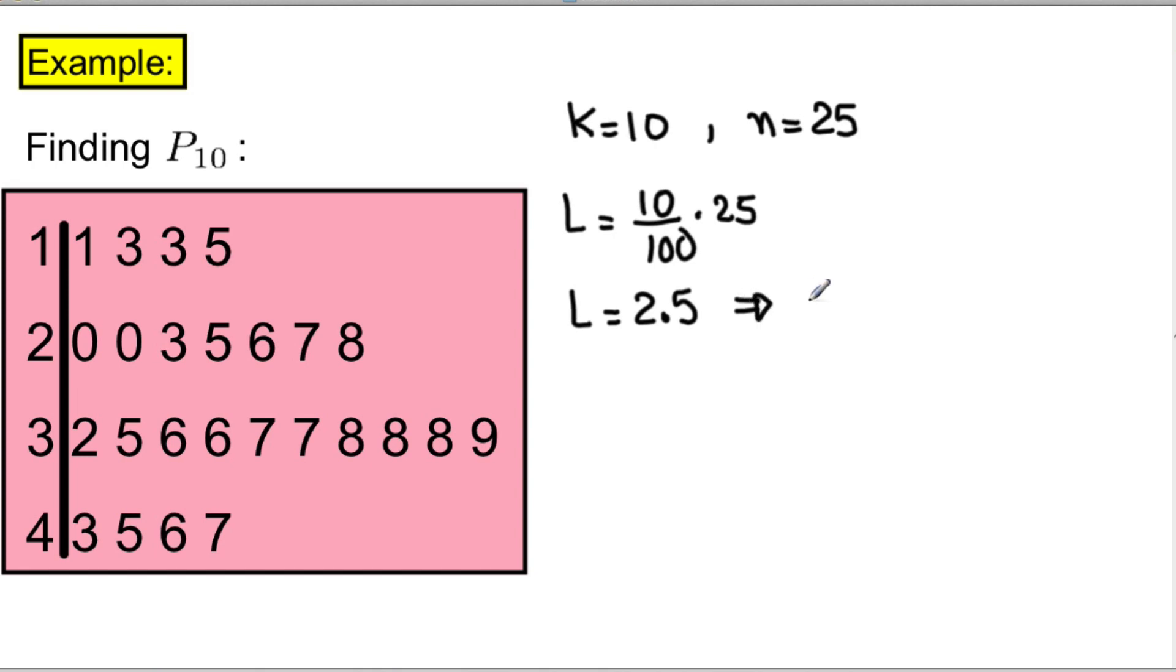Now, if L is decimal, we round up. So, the value of L is equal to 3. So, P10 is the third value. Referring back to the stem plot, P10 will be equal to 13.